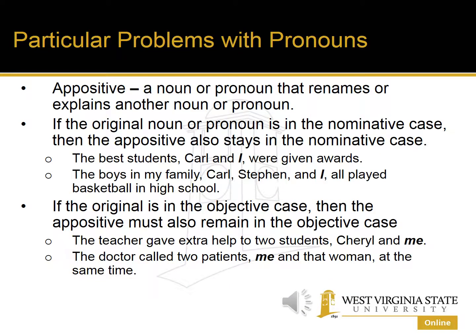Another problem with pronouns is with appositives. An appositive is a noun or pronoun that renames or explains another noun or pronoun. If the original noun or pronoun is in the nominative case, then the appositive also stays in the nominative case. For example: 'The best students, Carl and I, were given awards.' 'Students' is the subject in the nominative case; therefore, the appositive 'Carl and I' must also stay in the nominative case.